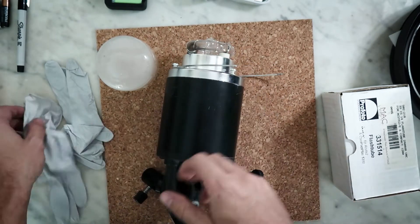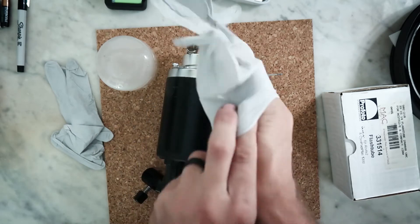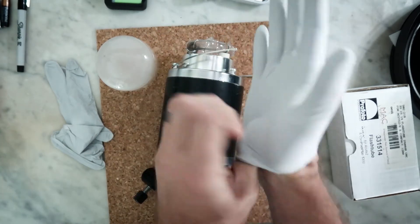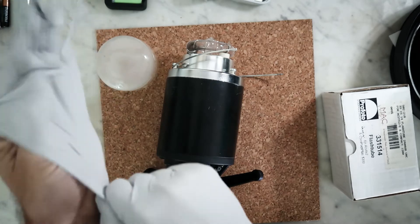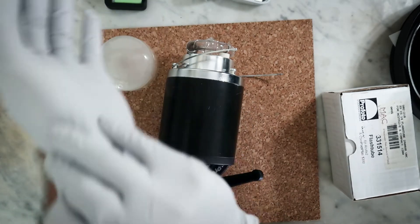Next thing, just make sure you put your gloves on. You can't touch the modeling lamp with your hand. I don't know about the flash tube but they're so damn expensive I'm not even gonna take a chance with it. So on the gloves go.